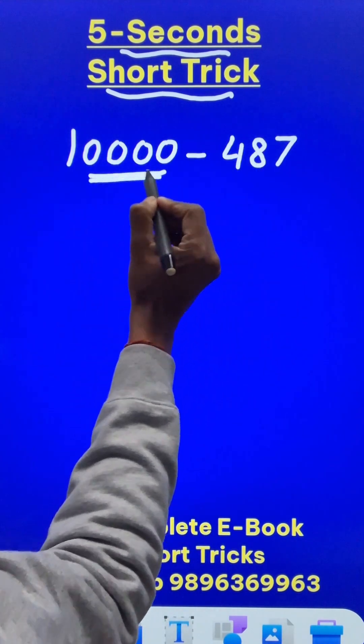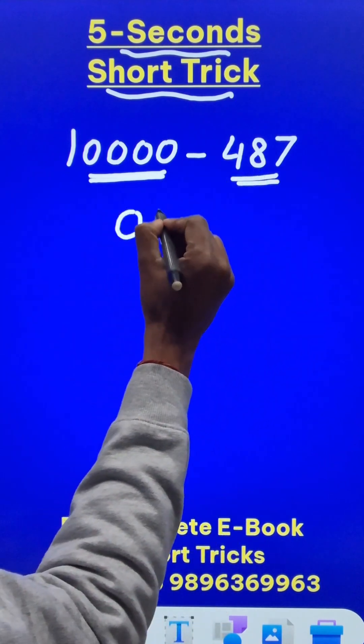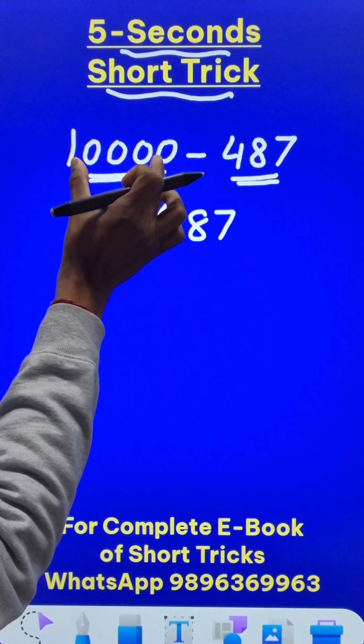See here there are 4 zeros and only 3 digits here. So we will prefix a 0 and then write 487 so that the number of digits here is equal to the number of zeros here.